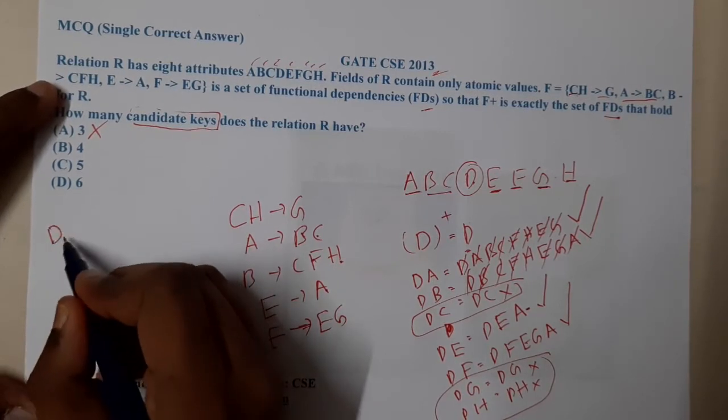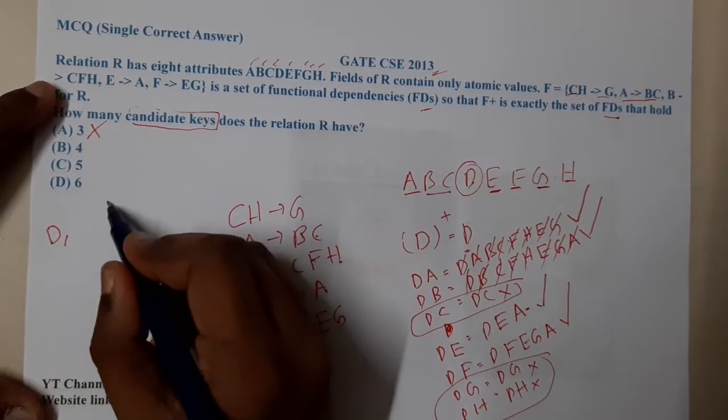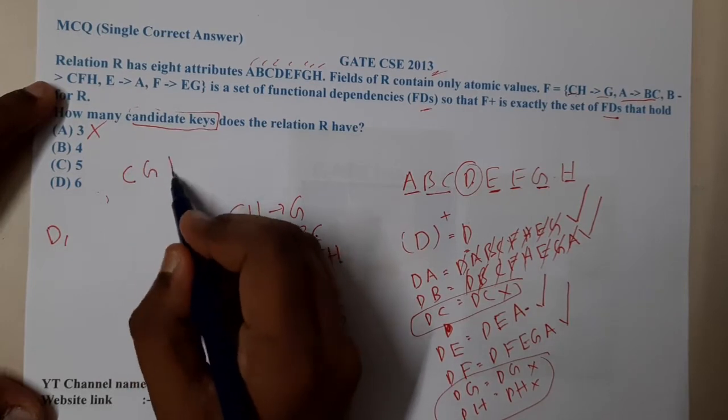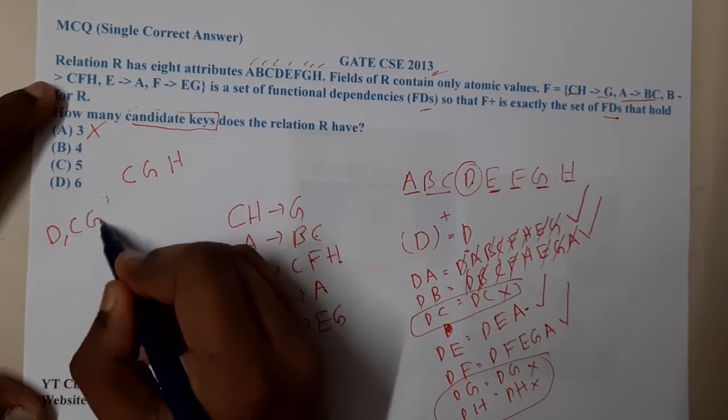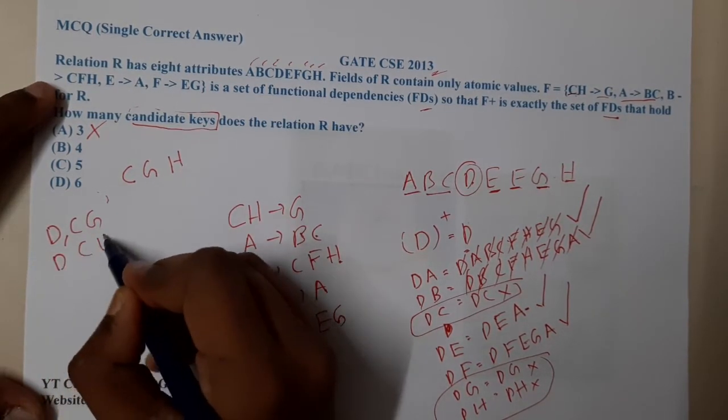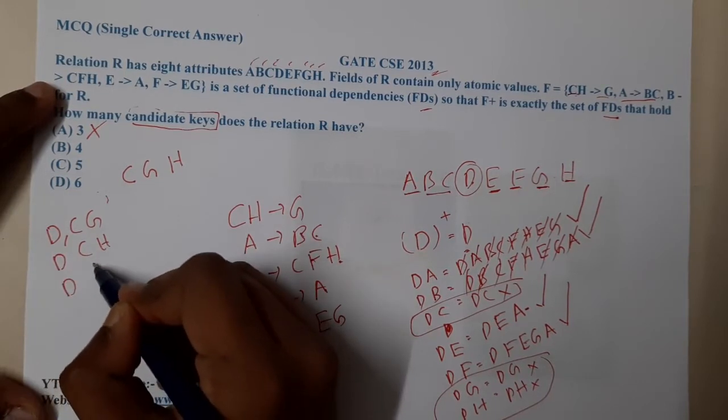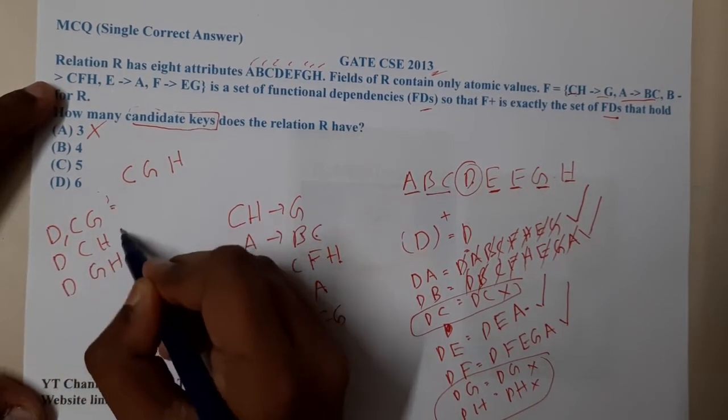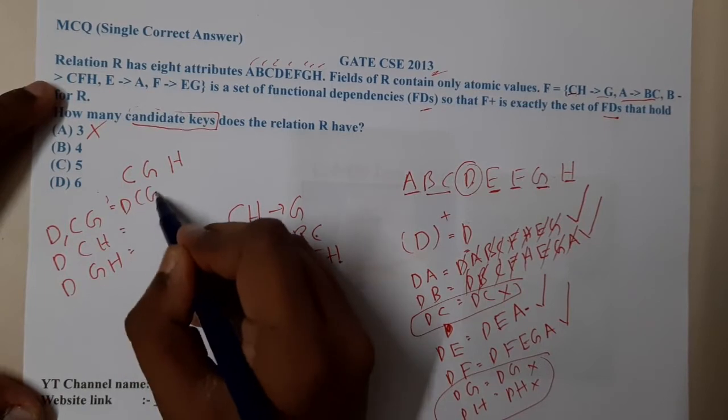D is mandatory. The variables are C, G, H. So DCG, DCH, DGH. These are the three possible combinations. I am just making combinations which have failed the exam.